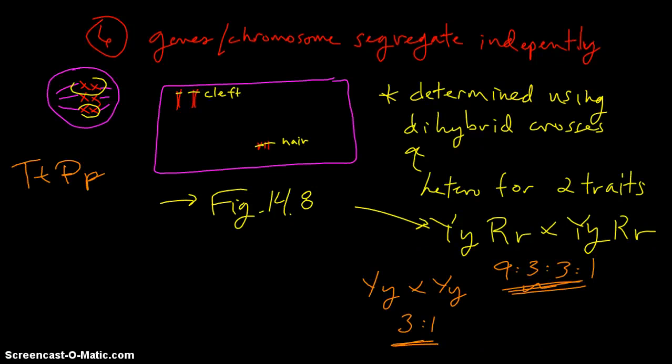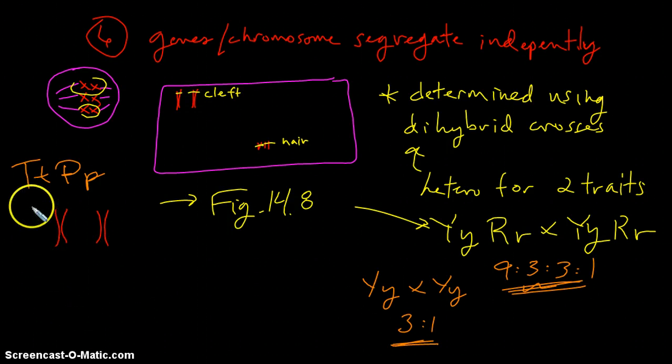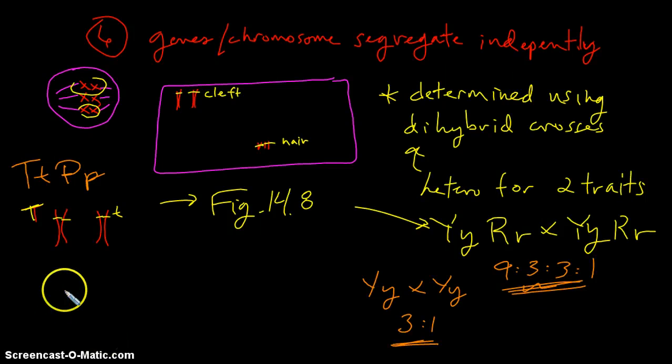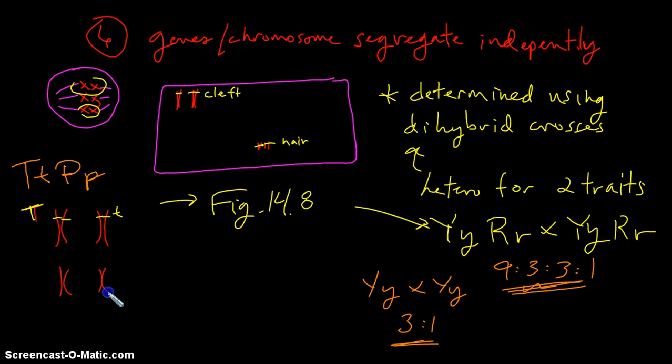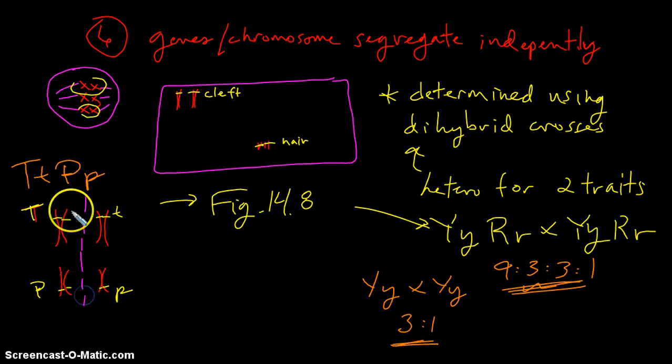Let's say we have this first chromosome, where you have a big T, and then a little t, and on the second chromosome, we'll have a big P and a little p. Now, how these line up during metaphase one of meiosis is random.